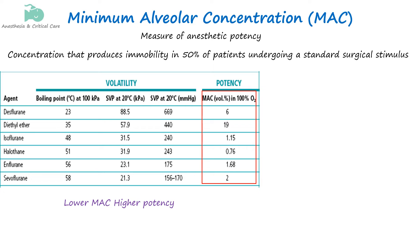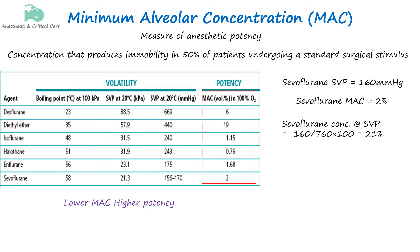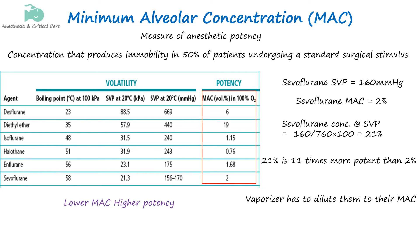Let's take sevoflurane as an example. It has an SVP of approximately 160 mmHg at 20 degrees Celsius, and a MAC of about 2%, meaning it is potent enough to induce anesthesia at this low alveolar concentration. When sevoflurane is fully saturated at atmospheric pressure of 760 mmHg, the concentration would be around 21% — approximately 11 times more than the 2% MAC value. Therefore, vapors must be diluted by mixing with oxygen and other gases to provide clinically meaningful concentrations.